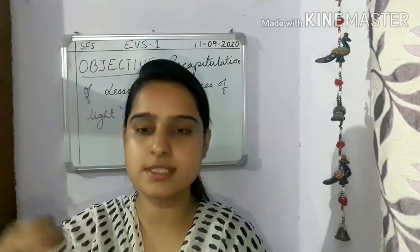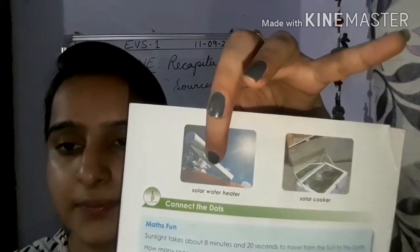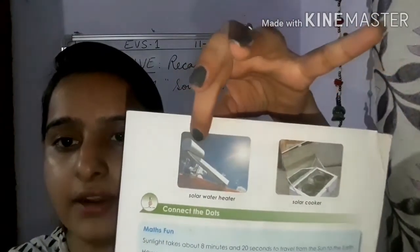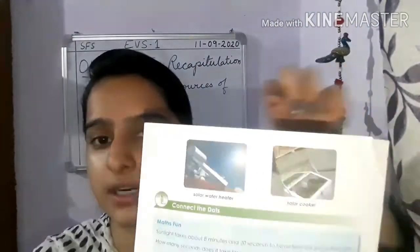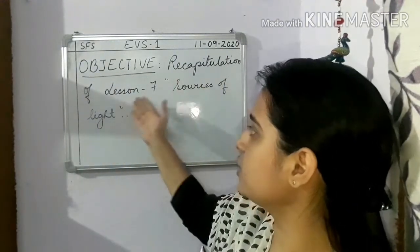We also covered light as heat — how we can use sunlight for heating water and for cooking food. You know that we can use sunlight for heating water with the help of a solar water heater, and with the help of a solar cooker we can cook or heat food. Today the objective of the class is a recapitulation of Lesson 7: Sources of Light.